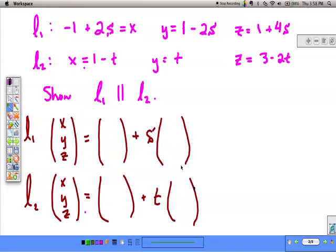Here we have two lines, L1 and L2. We want to show these two lines are parallel. First, let's put them into vector notation. Pause the video and fill in these points. The first line has a point at (-1, 1, 1) and a direction vector of (2, -2, 4).